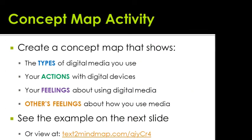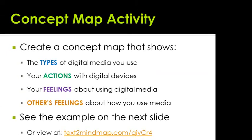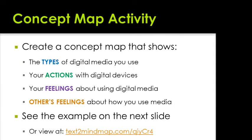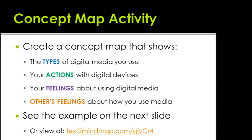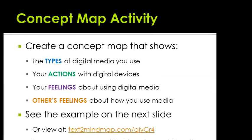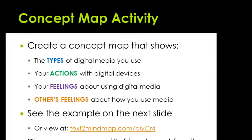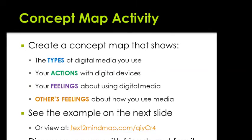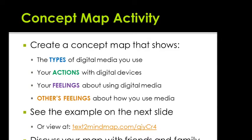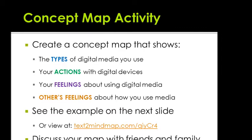Now it's time for an activity — we're going to create a concept map. Use a piece of paper with the following headings: types, actions, feelings, and others' feelings. We're going to discuss the types of digital media you use, your actions with digital devices, your feelings about using digital media, and others' feelings about your use of media. Self-reflect and brainstorm about all four parts. List items that are both general, such as cell phones, and specific, like playing Call of Duty or World of Warcraft.